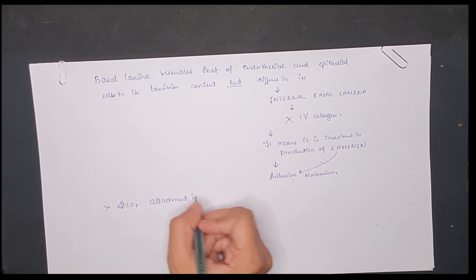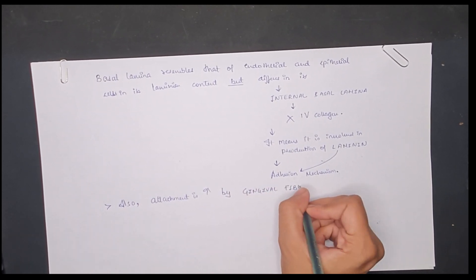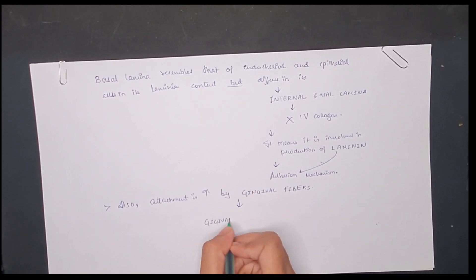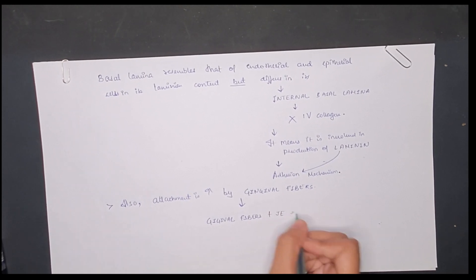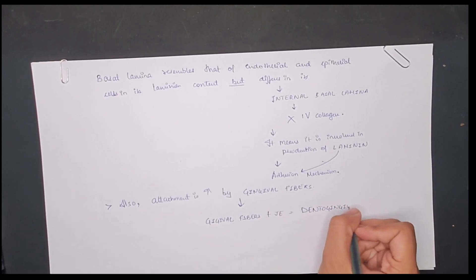Attachment is reinforced by the gingival fibers. Therefore, a very important unit—the dentogingival unit—is formed by the gingival fibers and junctional epithelium.